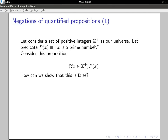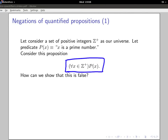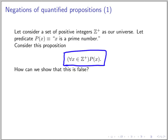Let's start with an example. We have the set of positive integers Z+, and predicate P(x) which says 'x is a prime number.' After quantifying P(x) with 'for all x in Z+,' we get a proposition. Is this proposition true — that every positive integer is a prime number? This is false. How can we show that?